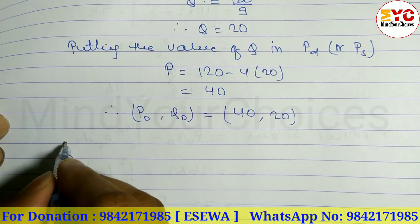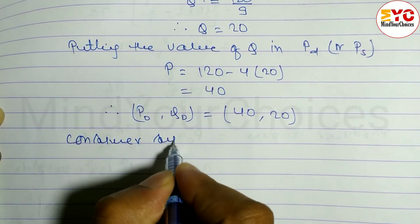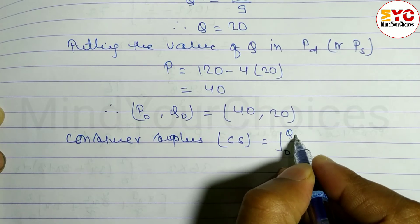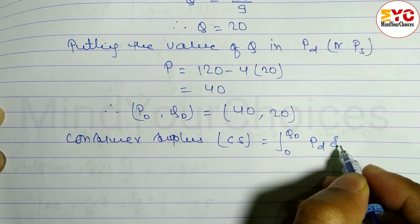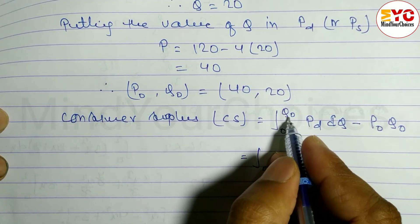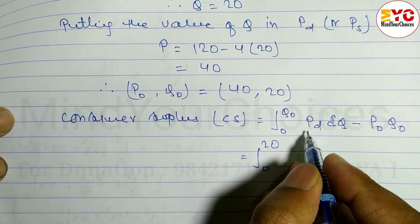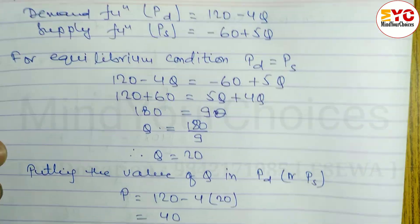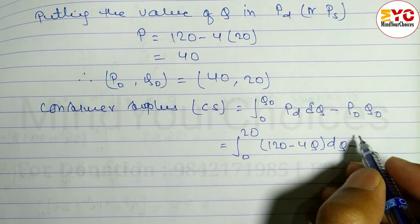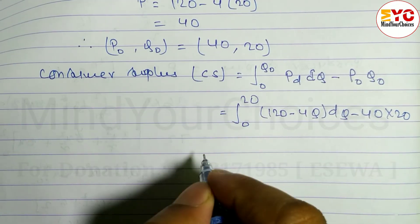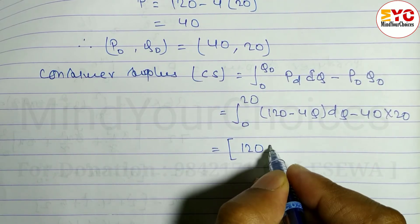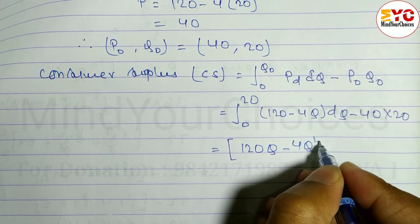Now I am going to write the consumer surplus and producer surplus. The consumer surplus formula, denoted by CS, is the integral from 0 to Q₀ of the demand function minus P₀, with respect to Q. So CS = integral from 0 to 20 of (120 - 4Q) dQ minus the initial price 40 times the quantity 20. Now integrating: 120Q - 4Q²/2, evaluated from 0 to 20.